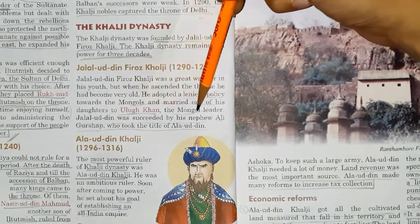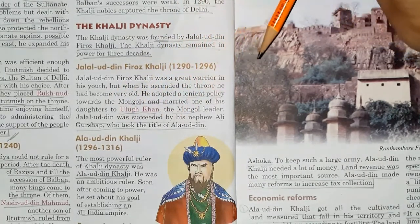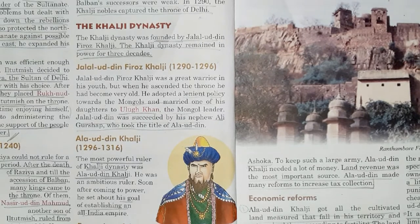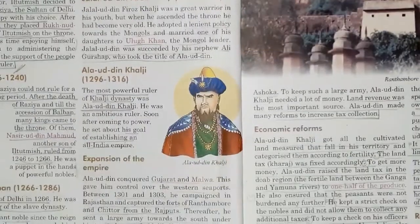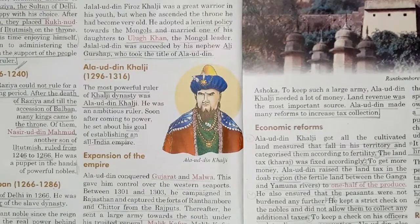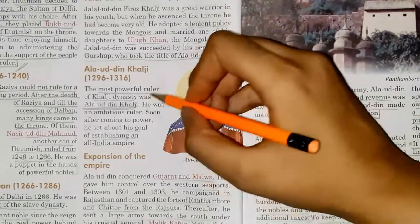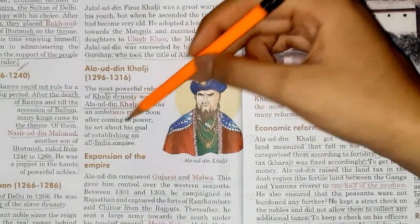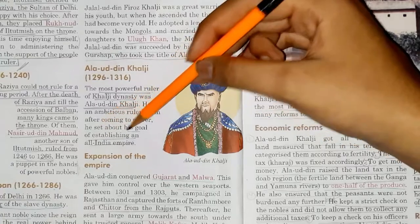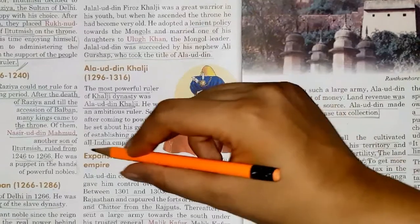Jalaluddin Feroz Khilji was succeeded by his nephew Ali Gurushap, who took the title of Alauddin. Alauddin Khilji was the nephew of Jalaluddin Feroz Khilji. He is a very important part of the Delhi Sultanate because he is the most powerful ruler of the Khilji Dynasty. He was an ambitious ruler, and soon after coming to power, he set about his goal of establishing an All India Empire — his goal was to rule over the whole of India.